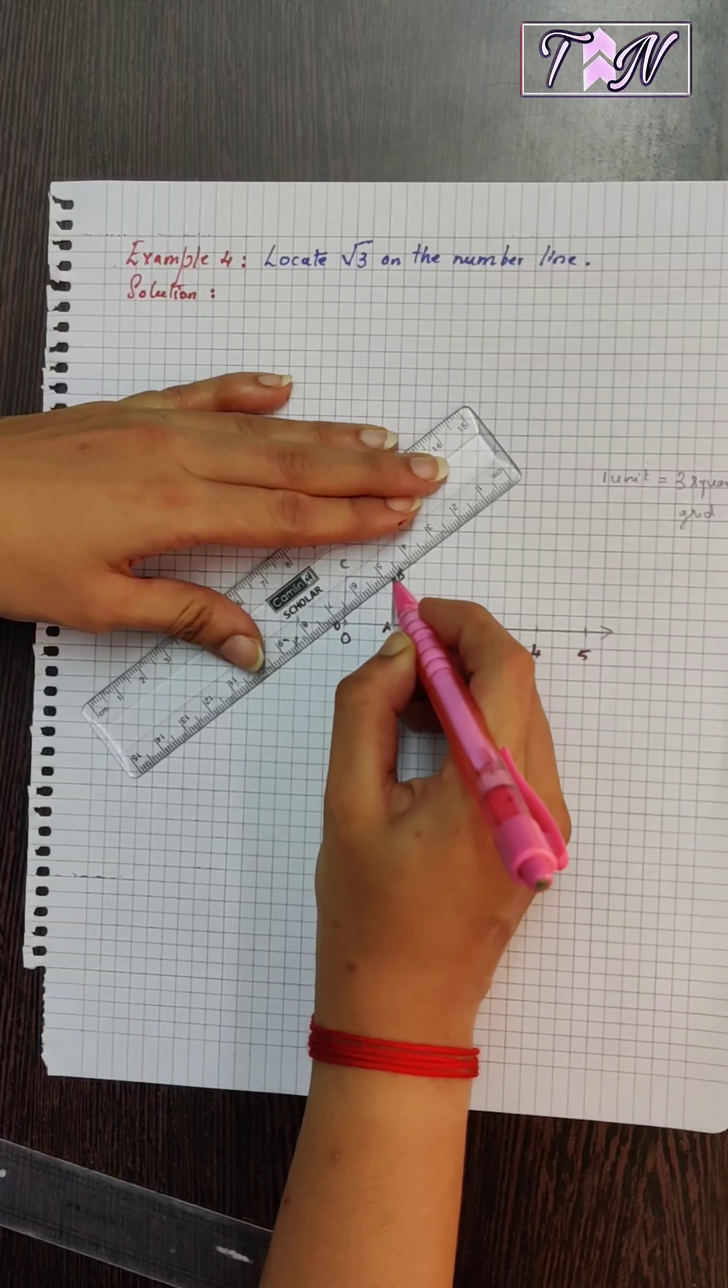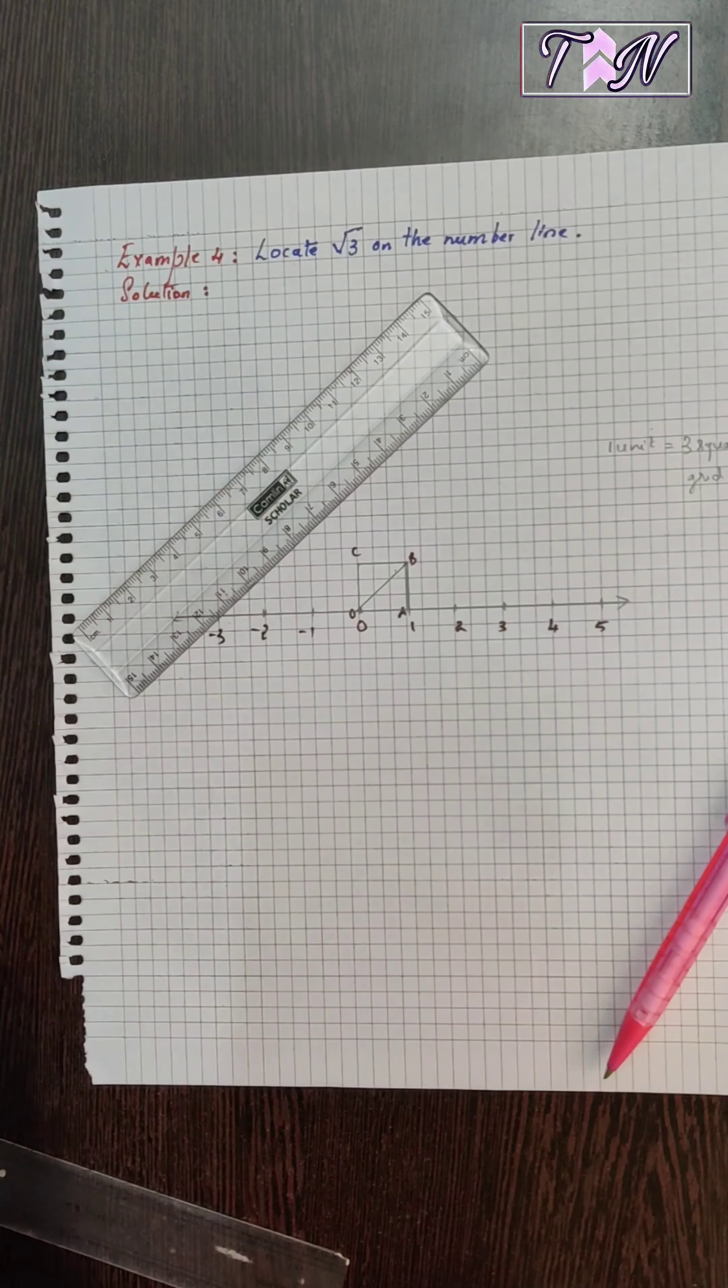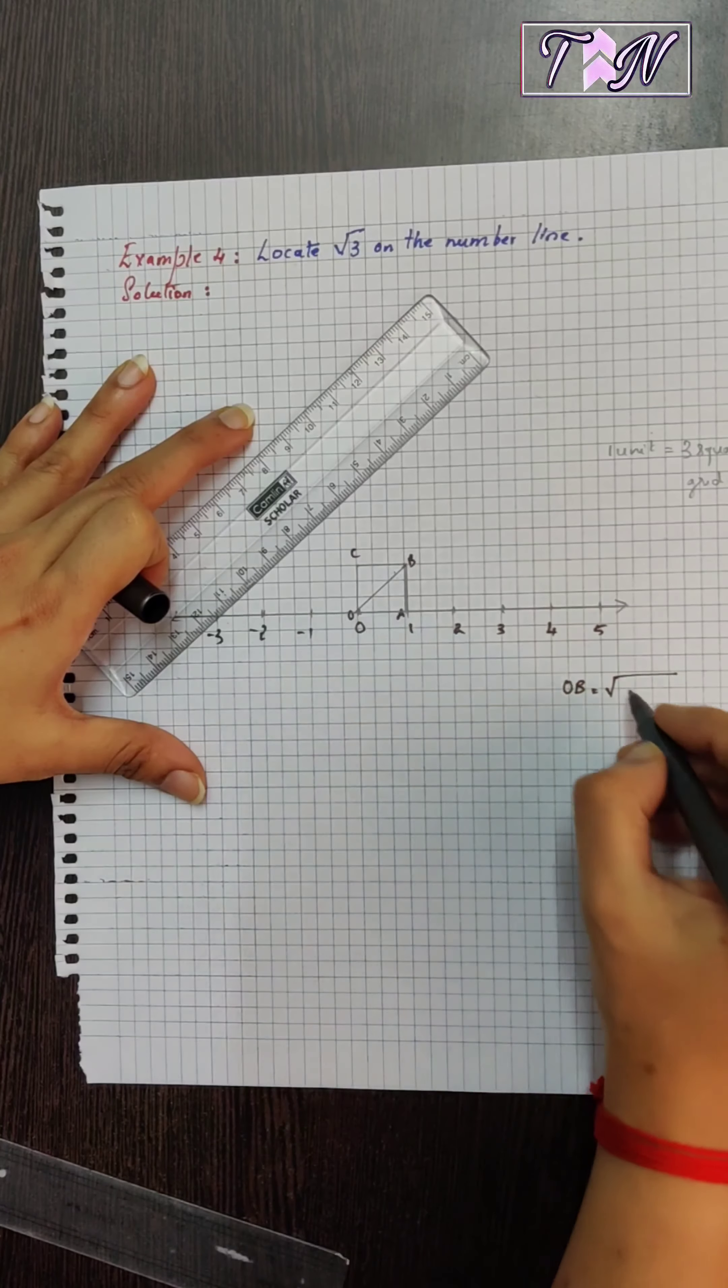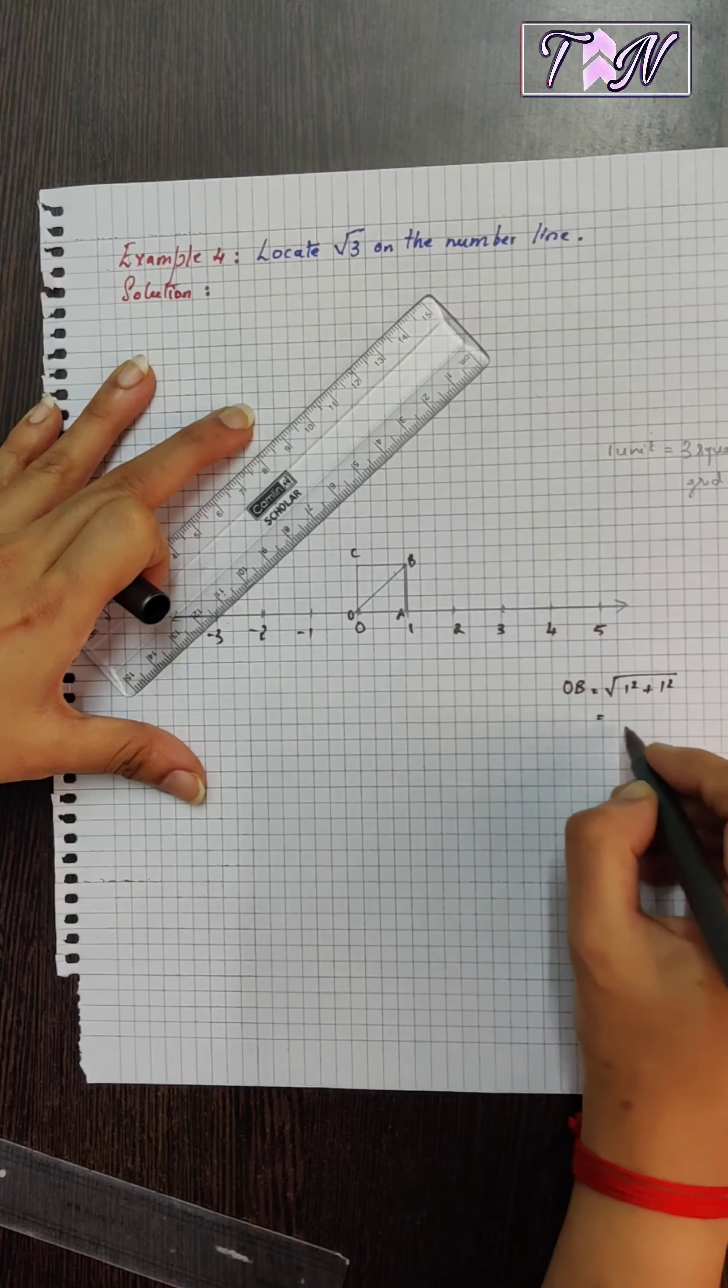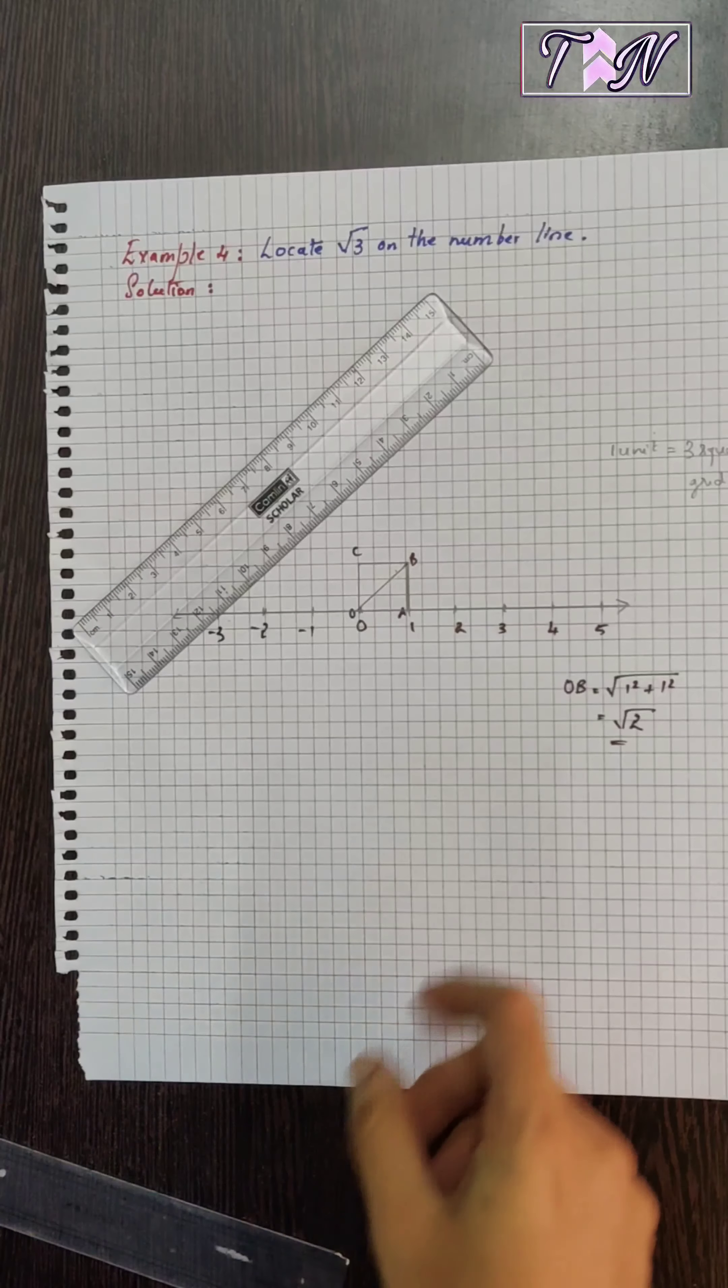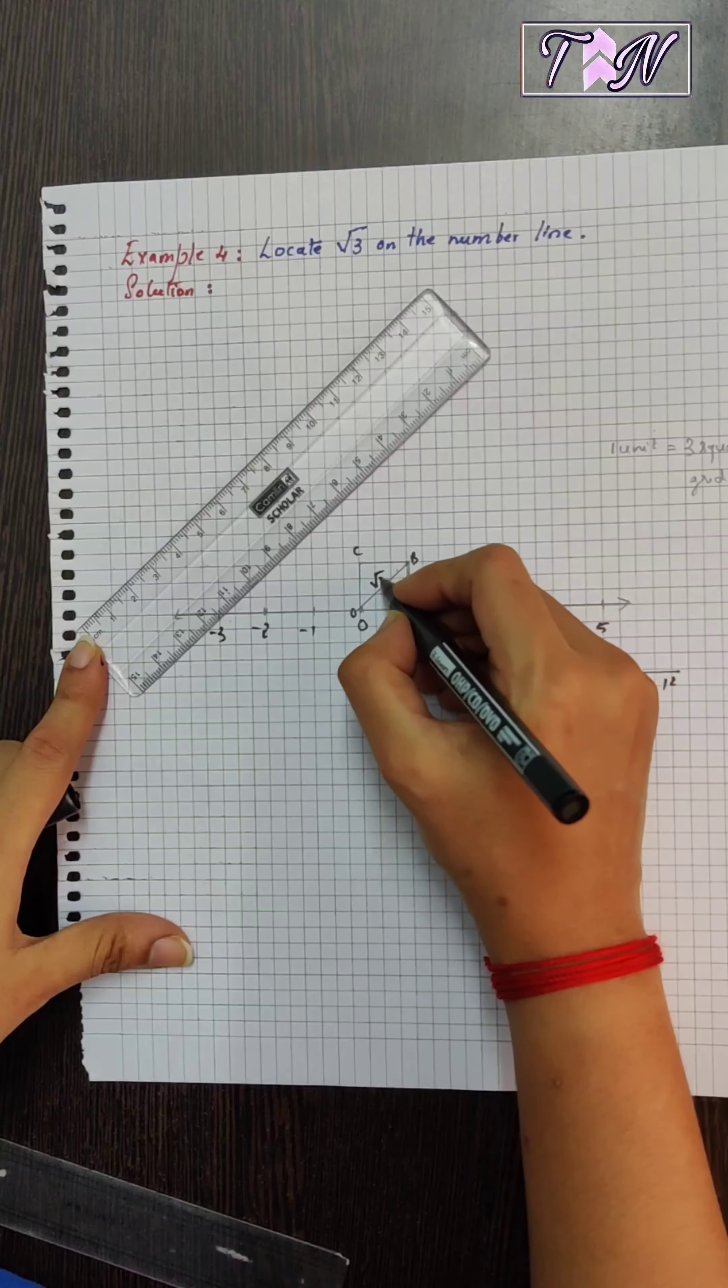So, join the diagonal. We know that OB is equal to root of 1 unit square plus 1 unit square, and that would be root of 1 plus 1, which is 2. So, we know that this is how we plotted root 2 on the number line. This would be root 2.